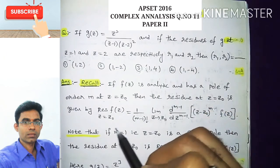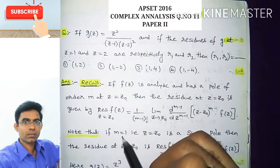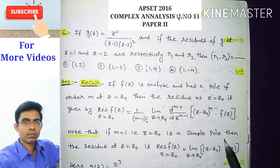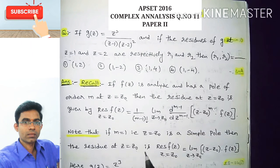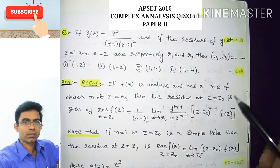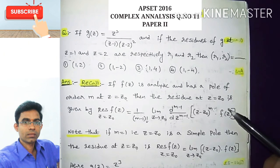Note that when m = 1, that is, z = z₀ is a simple pole, the residue simplifies to: the limit as z tends to z₀ of (z - z₀) · f(z). We will use these two formulas to solve the given problem.